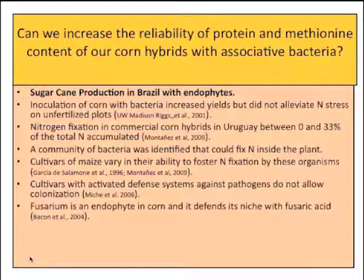The question is, can we do that routinely from farm to farm? Is it possible? And are there some ways that we can increase the reliability of protein content in that breed? We're very interested in this quality — if we had a bag of high-methionine corn, or high-protein corn, making sure that the farmer would really get that high protein. So we were interested in whether we could increase the reliability of our corn variety by inoculating different bacteria.